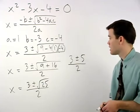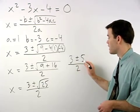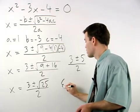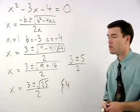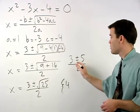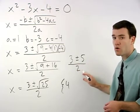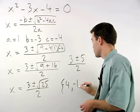So our solution is either 3 plus 5 over 2, which is 8 over 2, or 4, or 3 minus 5 over 2, which is negative 2 over 2, or negative 1.